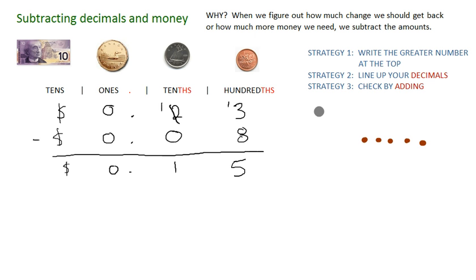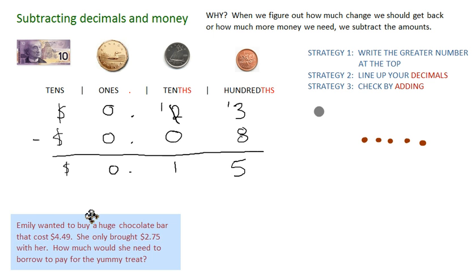So I'm going to model a word problem for you just to use the strategies in action. Emily wanted to buy a huge chocolate bar that cost $4.49. That would be a massive chocolate bar. So here it is. I always like to draw it out. $4.49. That's 4, that's not a 7.